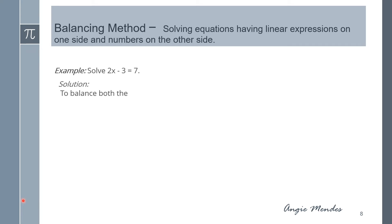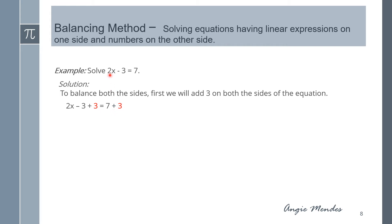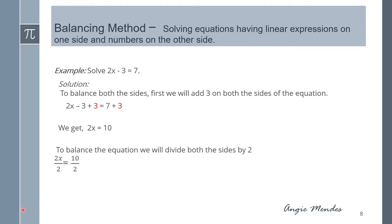To solve 2x minus 3 is equal to 7, we balance both sides by adding 3 on both sides. So we get 2x minus 3 plus 3 equal to 7 plus 3, which gives us 2x equal to 10, since minus 3 plus 3 is 0 and 7 plus 3 is 10. Now we divide both sides by 2 and get x is equal to 5.